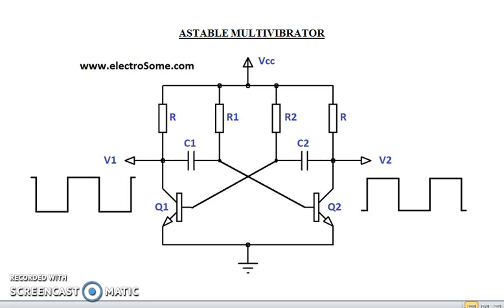Now coming to the working of astable multivibrator, when the circuit is switched on, one transistor will be driven to saturation, that is into the on state. The other will be driven to cutoff. Now consider that Q1 is on and Q2 is off.